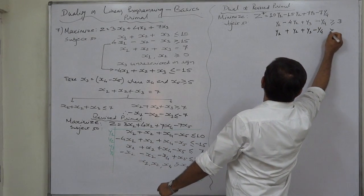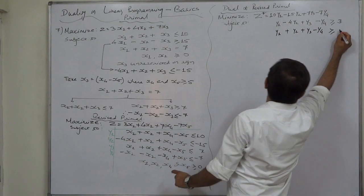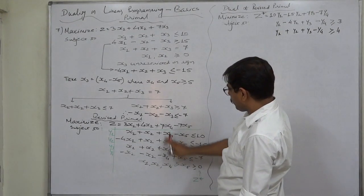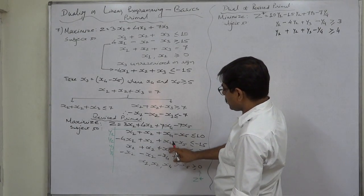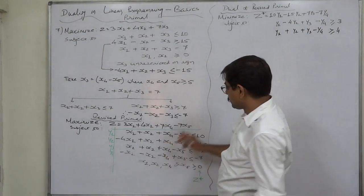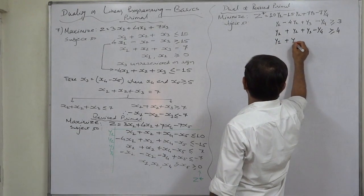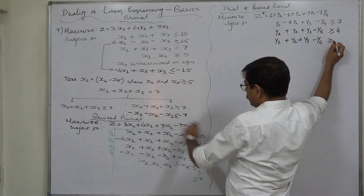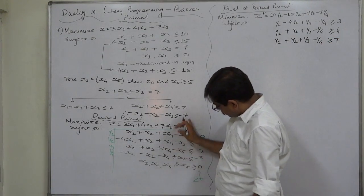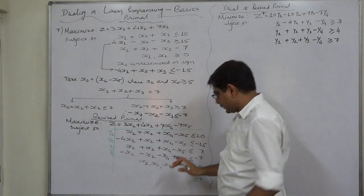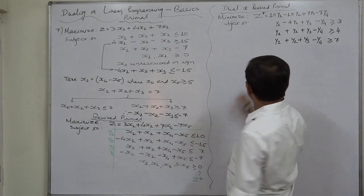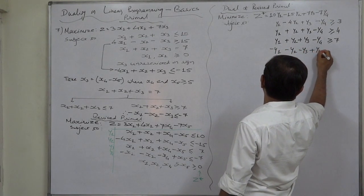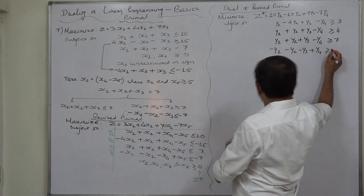From x2: y1 − y2 + y3 − y4 ≥ 4. From x4: y1 + y2 + y3 − y4 ≥ 7. From x5: −y1 − y2 − y3 + y4 ≥ −7. All four dual variables y1, y2, y3, y4 are currently non-negative.